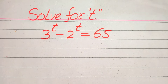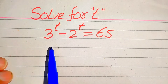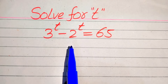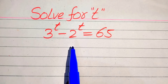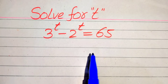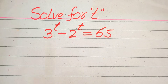Hello everyone. How to solve this problem for the values of t if we have 3 to the power of t minus 2 to the power of t equals 65, and we solve this problem for the values of t.